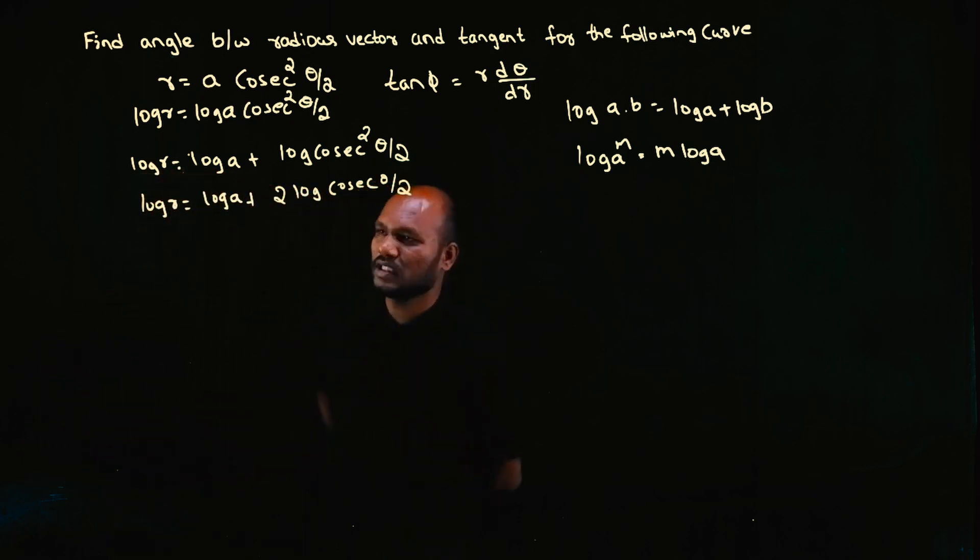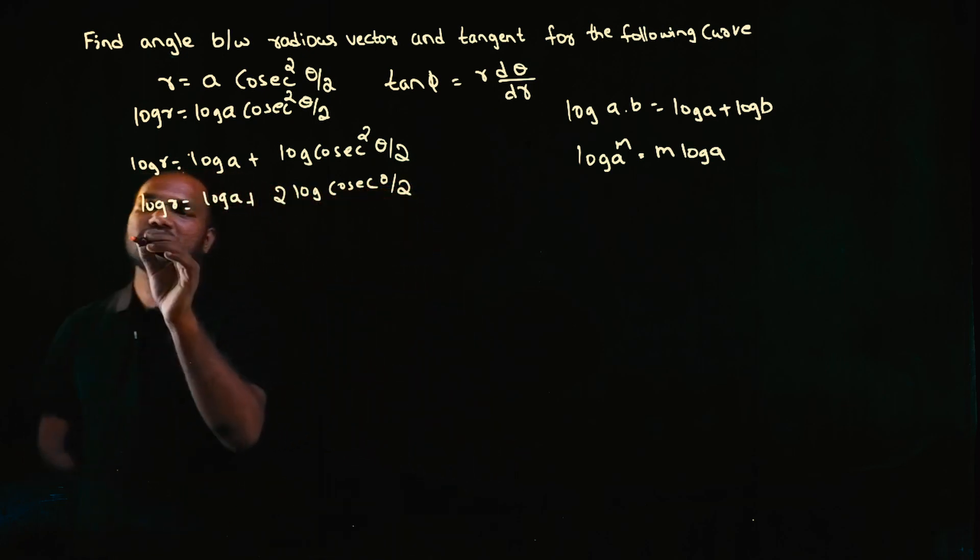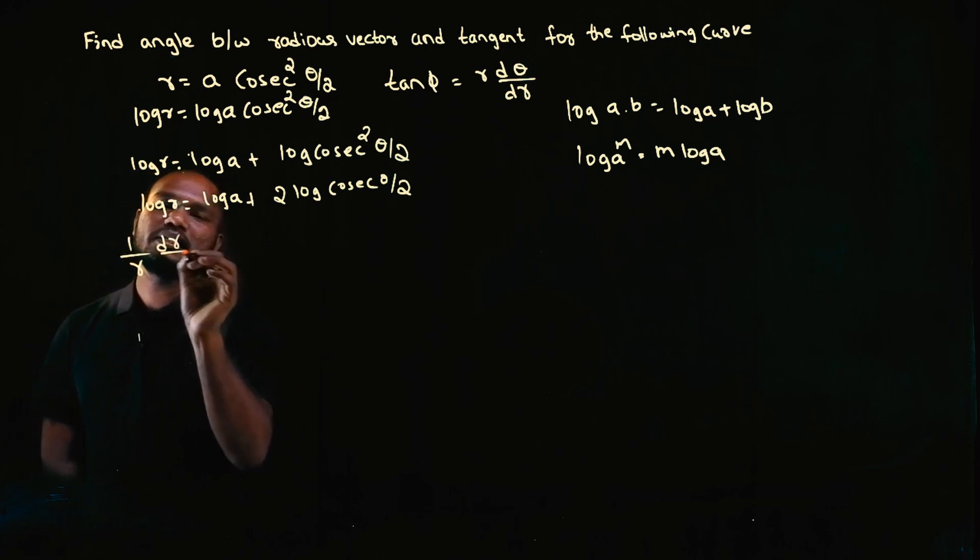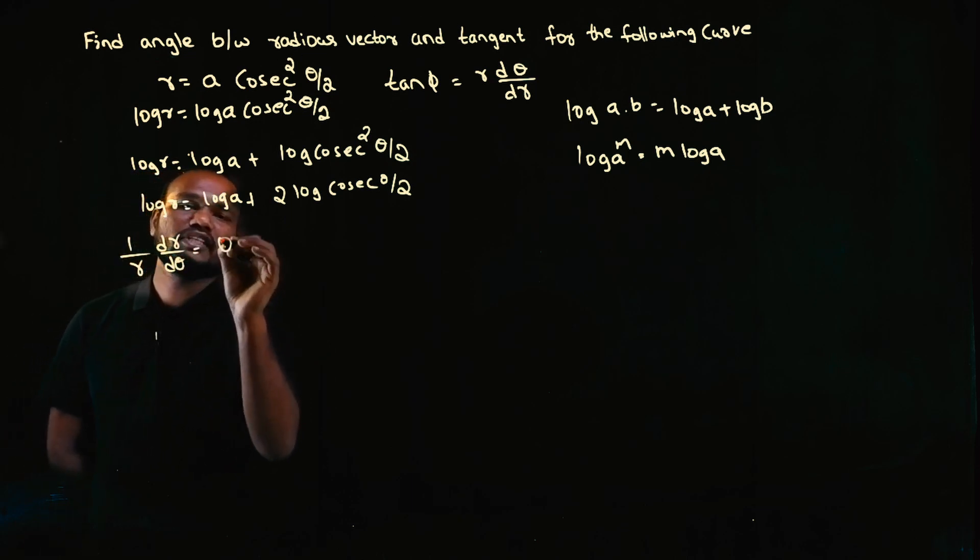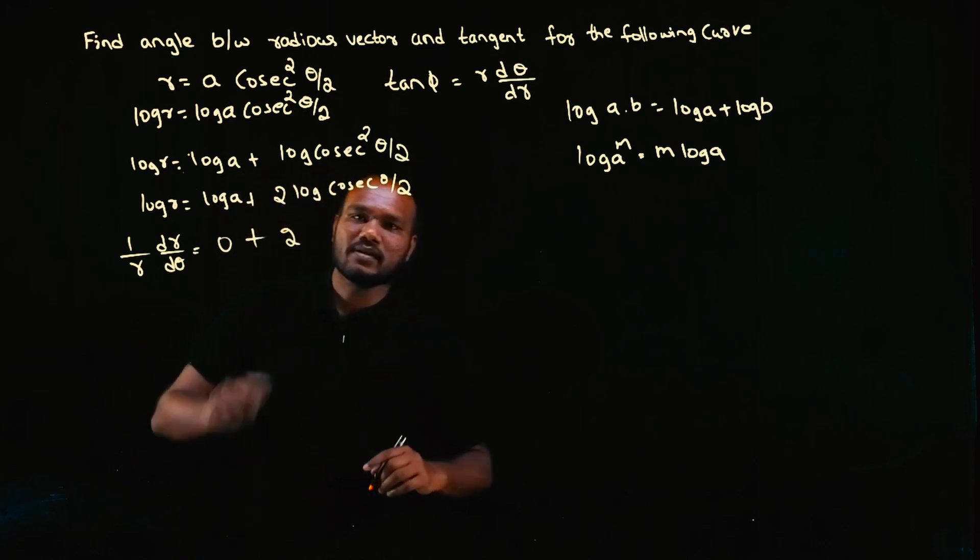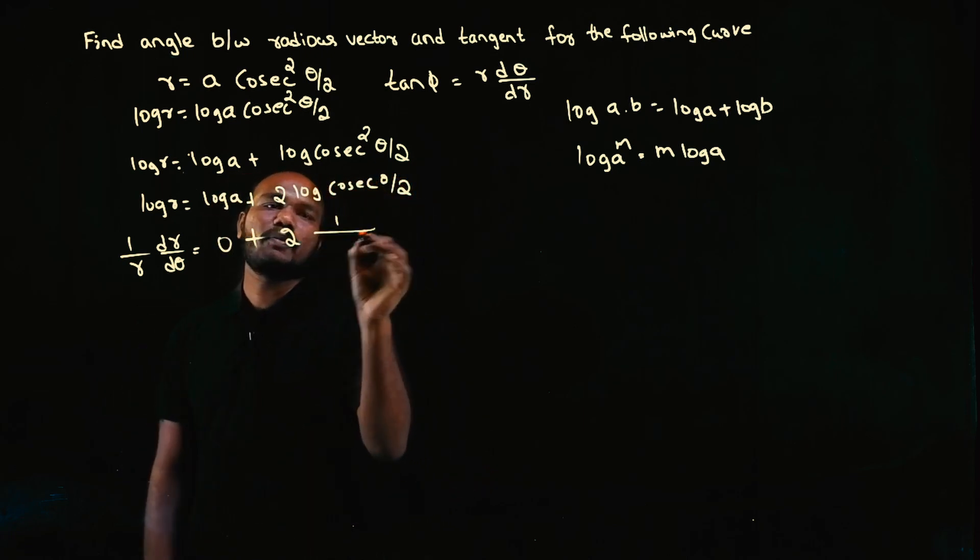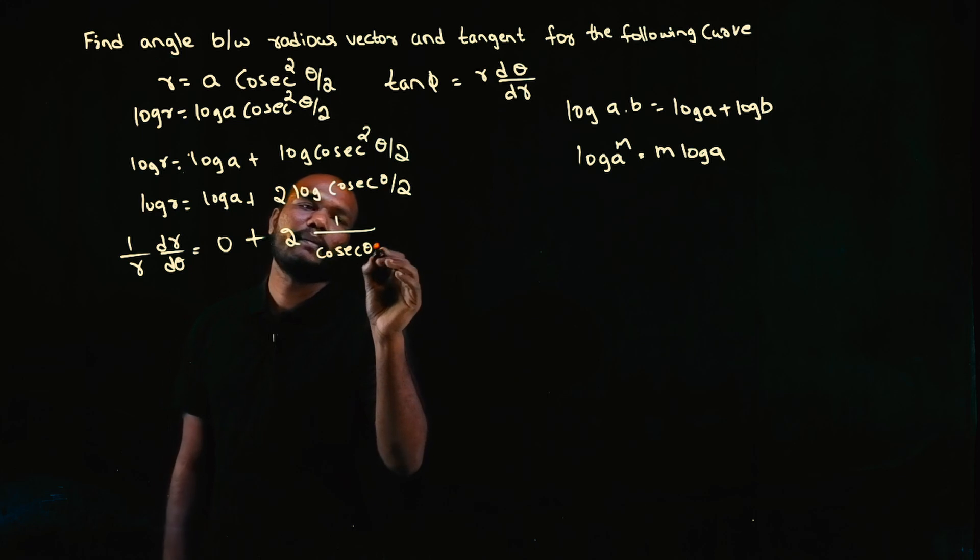Now we need dθ/dr. So let's differentiate. Differentiation of log r is what? (1/r)·(dr/dθ). Log a differentiation is 0.